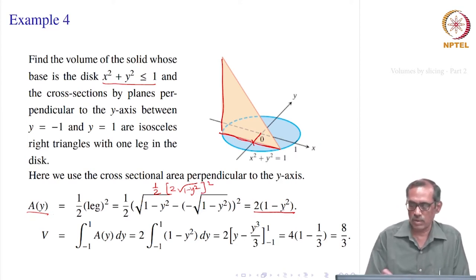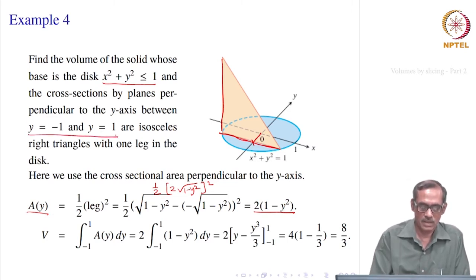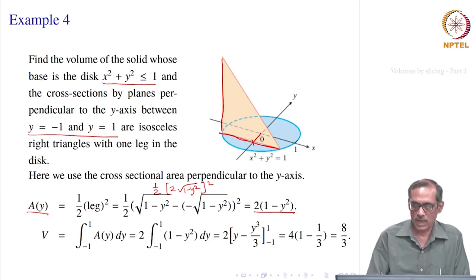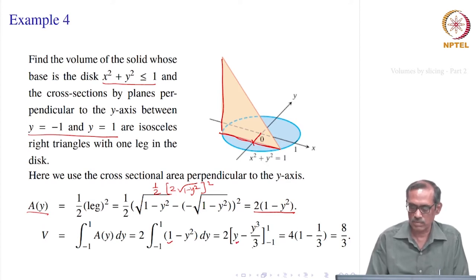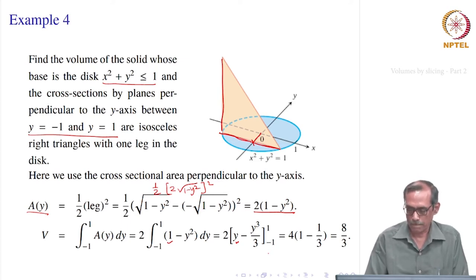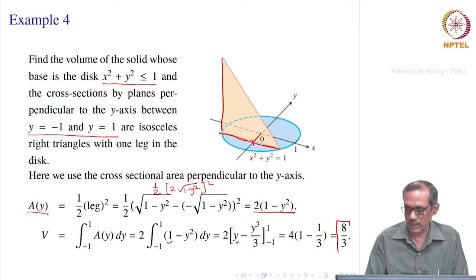So the cross sectional area we know. Then we can compute the volume; the limits for y are −1 and 1. So the volume will be equal to the integral from −1 to 1 of A(y) dy. That gives 2∫₋₁¹ (1 − y²) dy and its integral: 1 integrates to y, y² integrates to y³/3. This is to be evaluated at 1 and −1 and then subtracted, and you see that it is equal to 8/3.